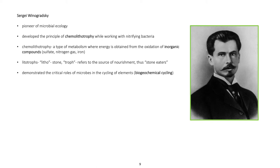Sergey Winogradsky, pioneer of microbial ecology. Developed the principle of chemolithotrophy - a type of metabolism where energy is obtained from the oxidation of inorganic compounds. Examples are sulfate, nitrogen gas, and iron. Lithotrophs - litho translates to stone, and troph refers to the source of nourishment. Thus, stone eaters. Demonstrated the critical roles of microbes in the cycling of elements or biogeochemical cycling.